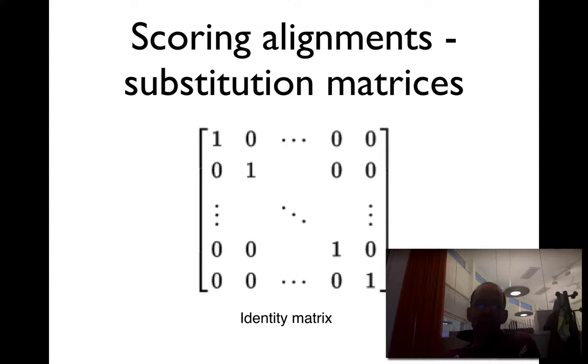The easiest one is an identity matrix. Basically, a score of one when you align to identical residues and zero for everything else, or minus one for everything else. This is just a very simple matrix, but it's not an optimal matrix. There are other matrices that are better.